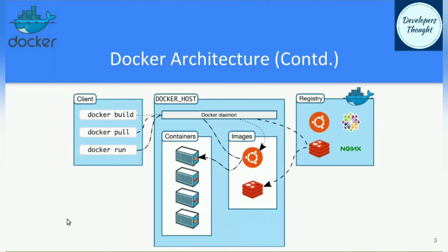Docker daemon first verifies whether the Tomcat Docker image is present inside the local Docker registry or not. After a search, it finds that the image is not present. It then pulls the Tomcat Docker image from the Docker registry and spins up the Docker container using that image.